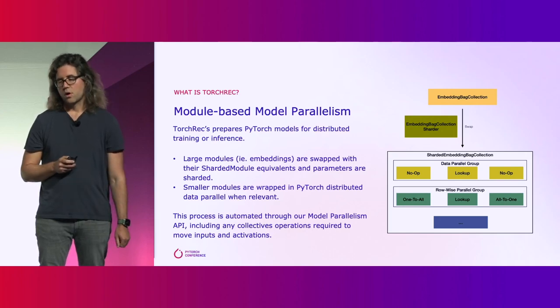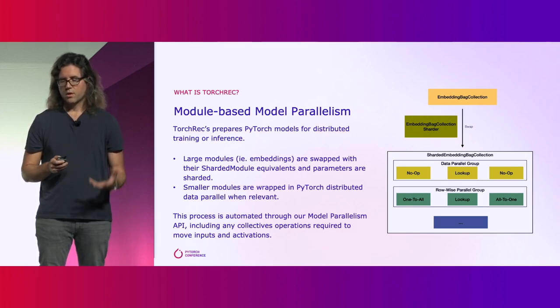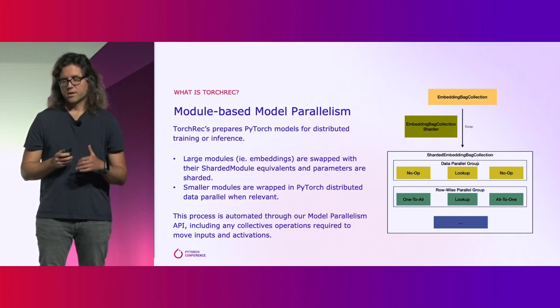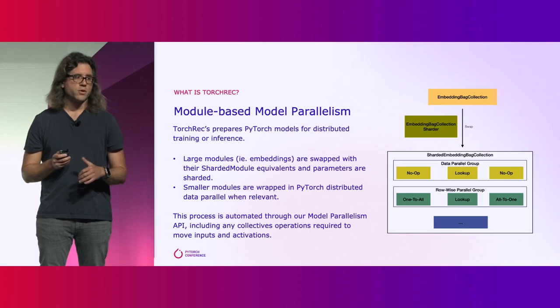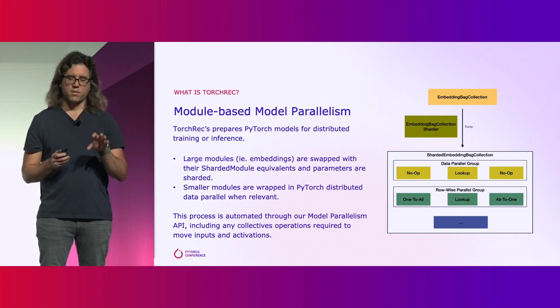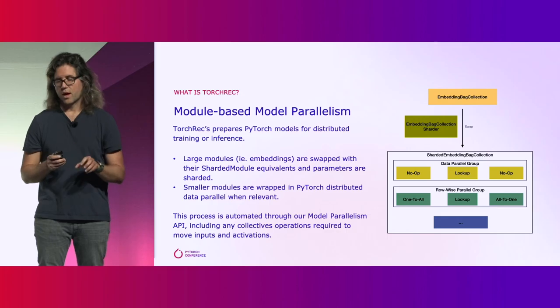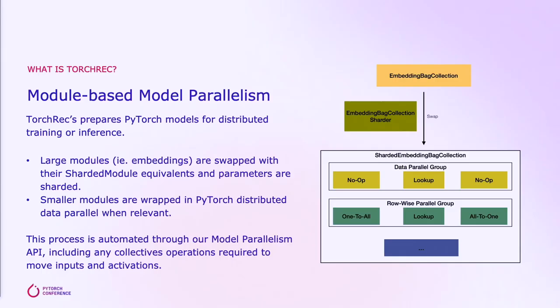So how do we do it? At its core today, we rely heavily on module-based model parallelism. Basically, TorchRec will take your PyTorch model and prepare it for distributed training. The most common technique is to replace modules with a sharded equivalent. In the example on the right of the chart, we have an embedding bag collection — our customized module — and we swap it out in the sharded environment, keeping the embedding lookup and adding collectives before and after that operation automatically so the user doesn't have to worry about those things.